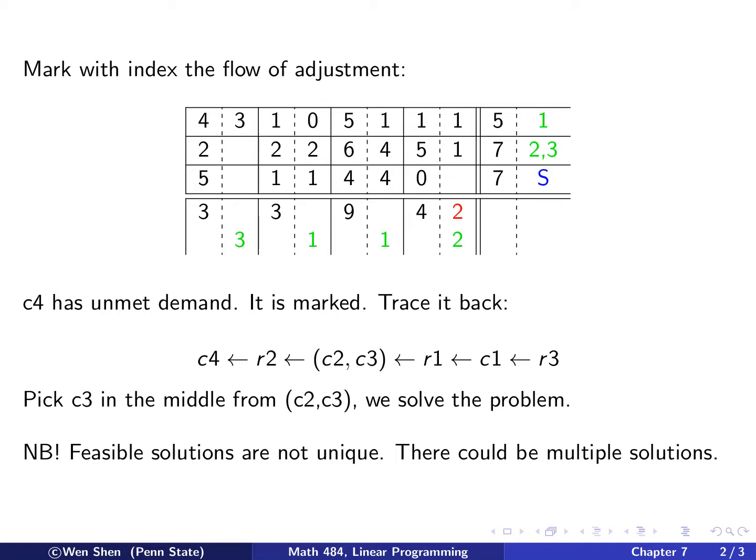A final remark before we move on. As you can see from this example also, feasible solutions are not unique. They could be multiple of them. For example, we can construct another feasible example for this one by picking C2 and from here and make the adjustment of one unit of adjustment. And then pick C3 and make another one unit of adjustment. We would have ended up with a different feasible solutions. So, there could be many of them. But as we have remarked at the beginning, for this problem, we just want to find a feasible solution. If we manage to find one, then that's the goal. And then we're happy.